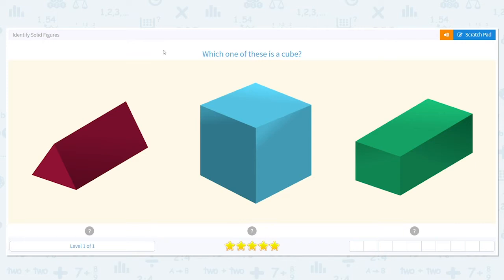A cube reminds me of dice. Dice are what we use to roll in a game to determine how many spaces we go or how far we go in a game. So which is a cube? A cube has six sides and they're all made of squares. So that means it's this one.